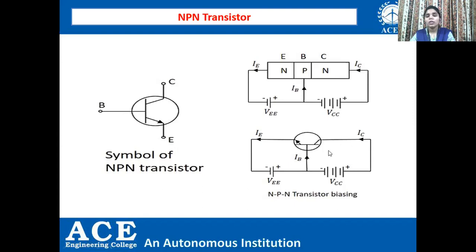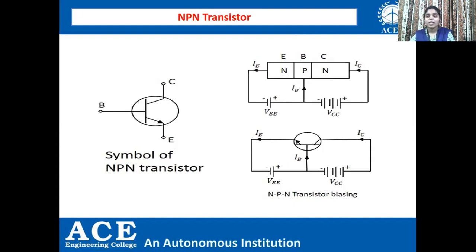The arrow represents the current direction. On the right-hand side you can see how the NPN transistor is visualized. The width of the base is less compared to the emitter, whereas the width of the collector is more compared to the emitter and base. Regarding doping levels: the doping concentration of the emitter is high, hence the emitter is heavily doped. The base is lightly doped and the collector is moderately doped.